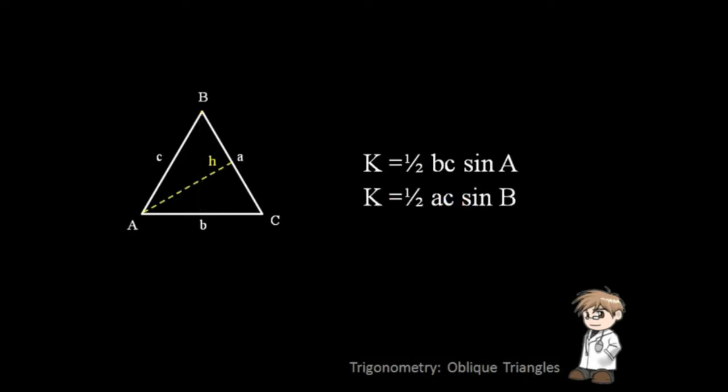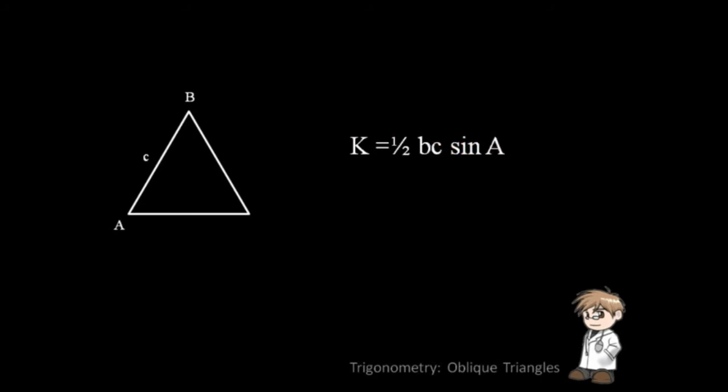There are also different variations of this formula depending on the given. But we are not limited to that formula alone. Suppose we are given angle A, angle B, and side C. You may notice that it's hard just to substitute the formula because there are values in the formula that are unknown. We will use the law of sines to determine the unknown value to successfully solve the area of the triangle.